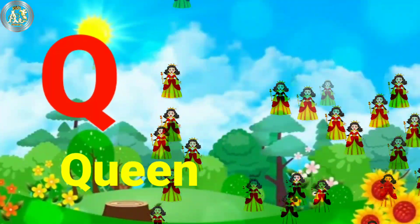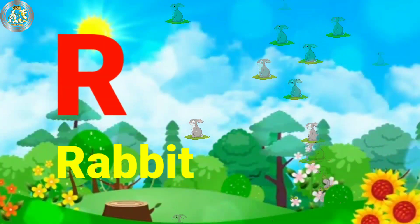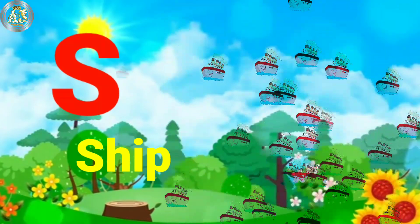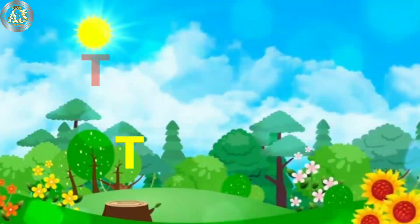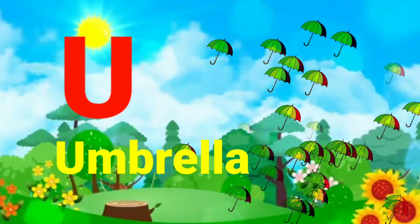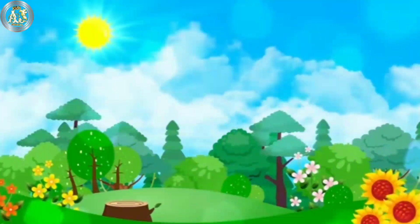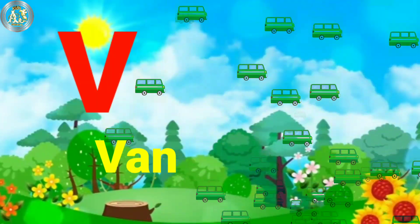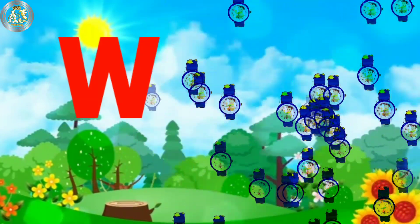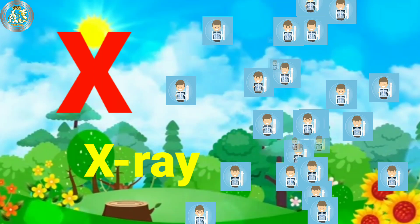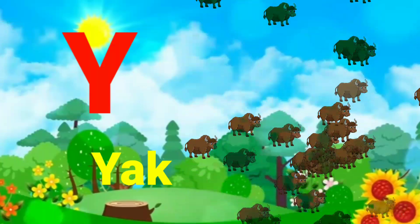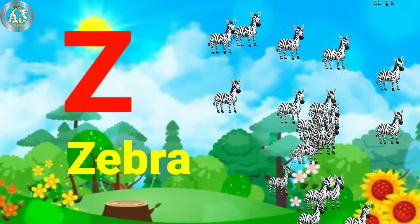Q for queen. R for rabbit. S for sheep. T for tiger. U for umbrella. V for van. W for watch. X for x-ray. Y for yacht. Z for zebra.